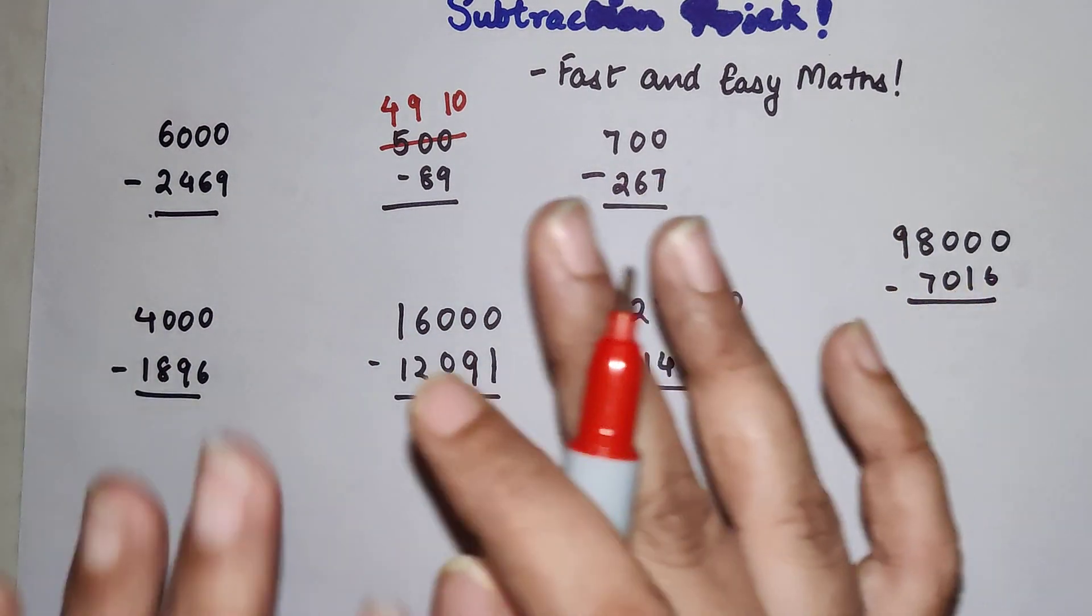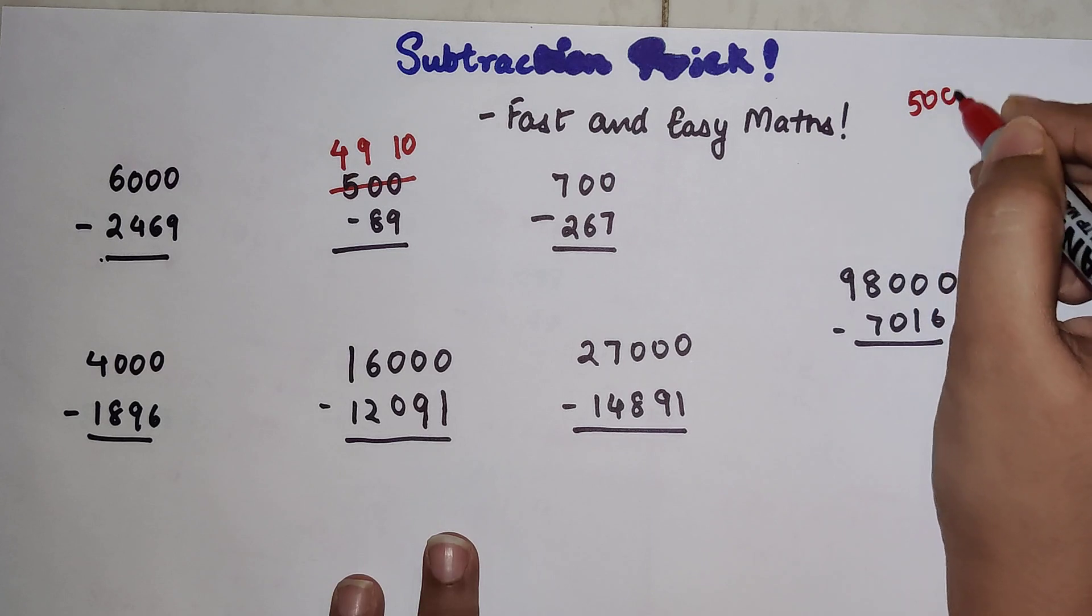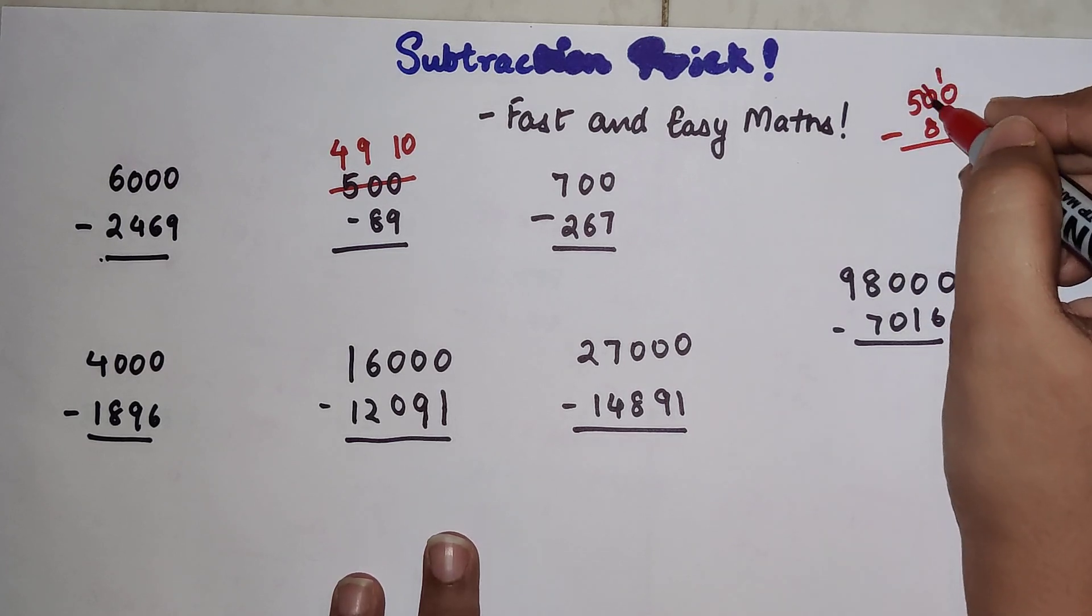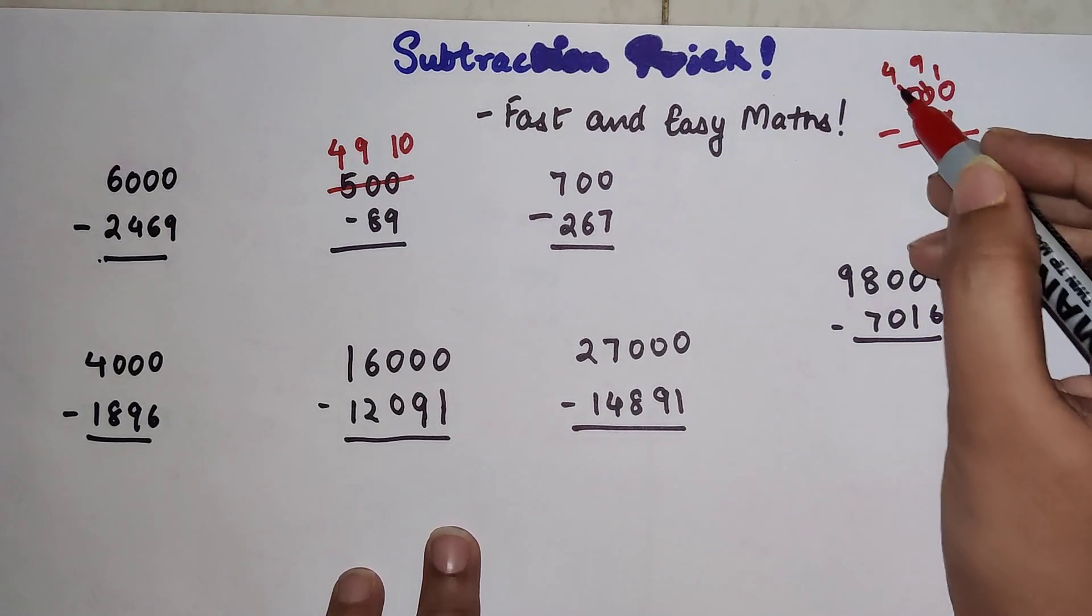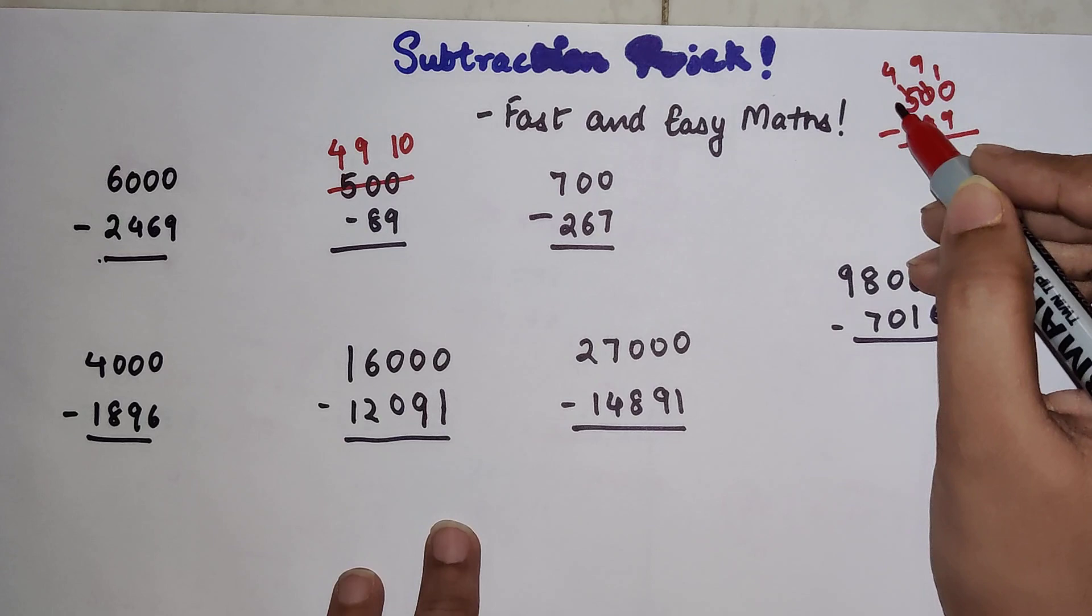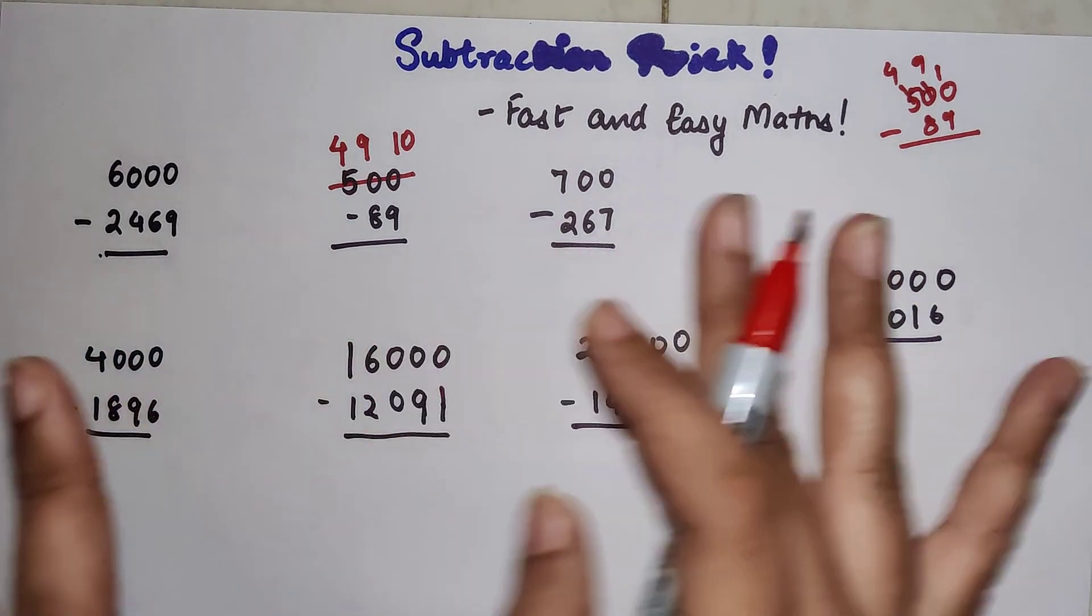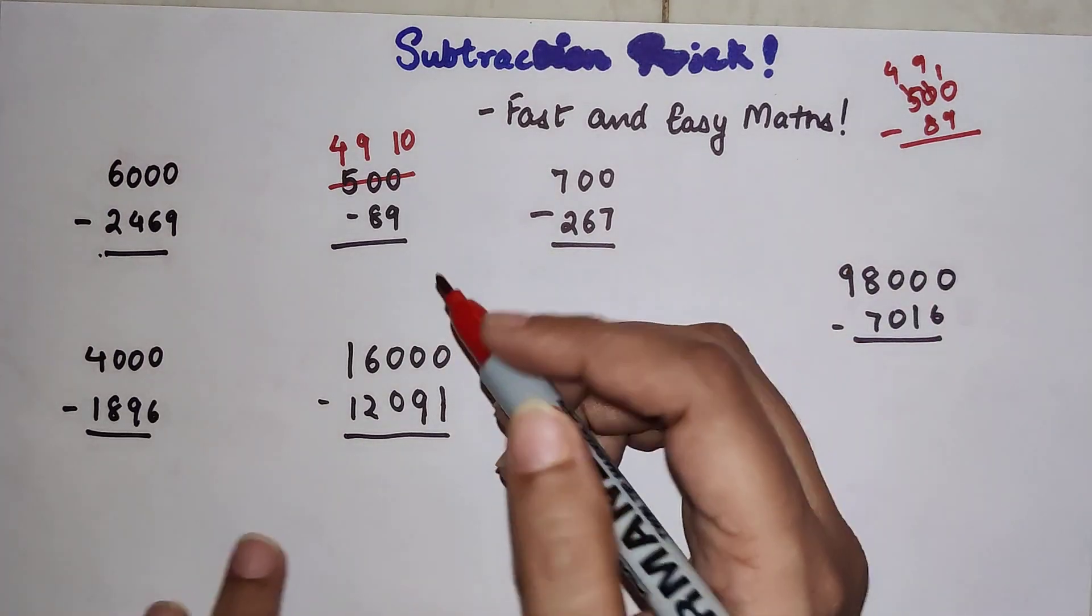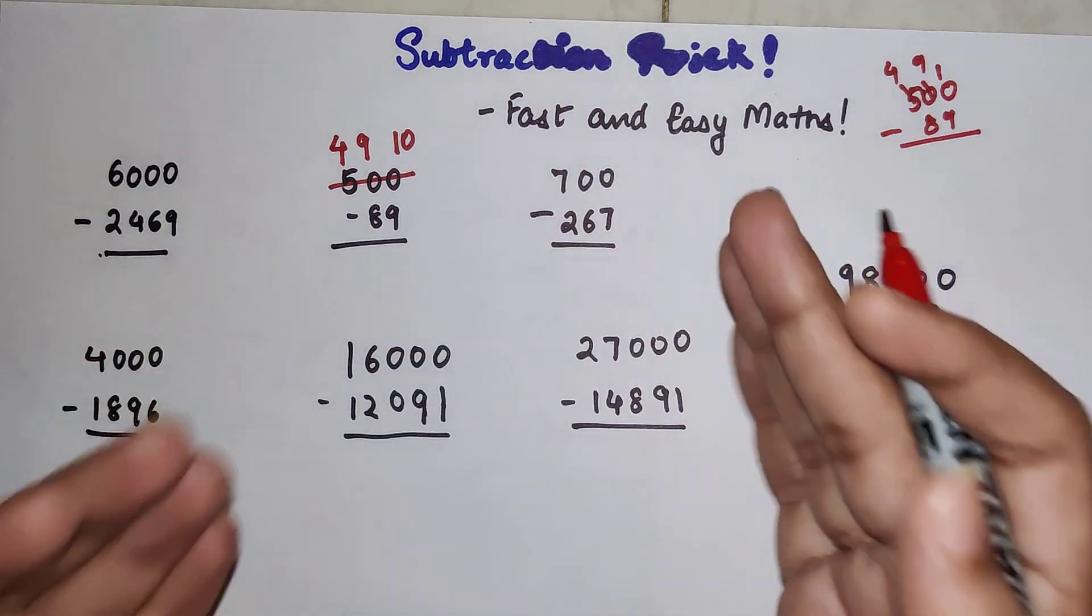That's very simple. See, if you had done this in a normal method, 500 minus 89, you would have done this only - make this 10, cancel this, make it 9, and this will become 4. It is just that when it comes to borrowing and doing one by one, students get confused. So instead of that, do it in one shot. You will literally reduce your confusion and you will be extremely sure about your answers, because here you do not have to second guess.